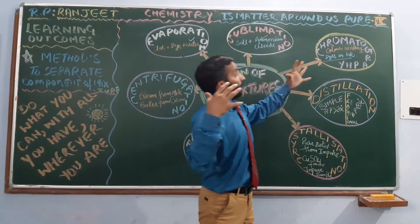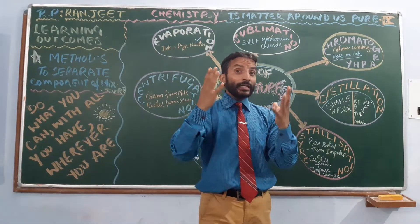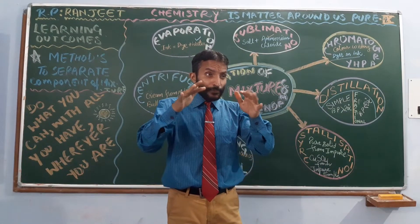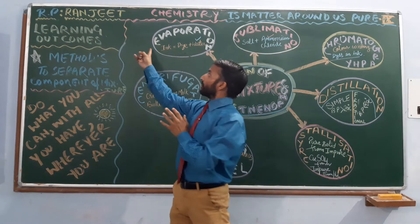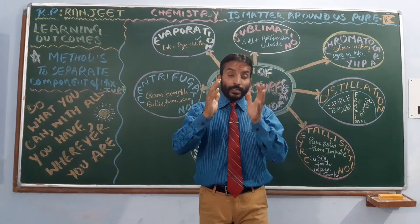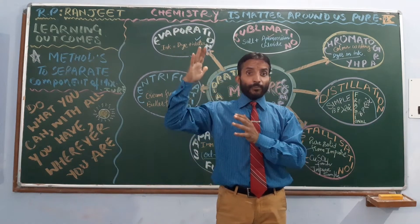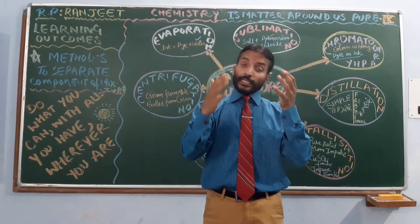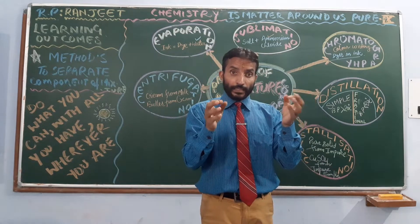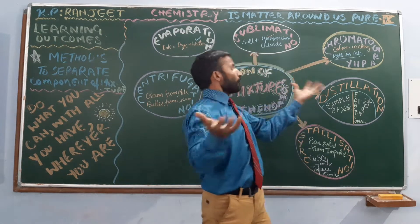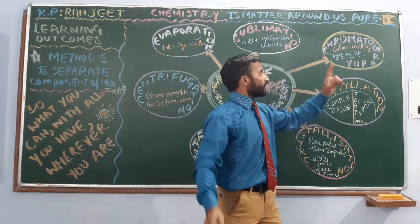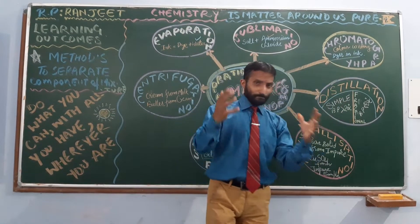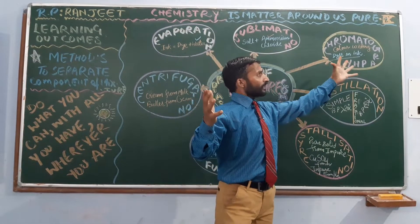Next is chromatography — meaning 'color writing.' This is the technique by which we can separate different colors in a dye. In our first experiment, we separated blue dye from blue ink by evaporation. Now, it is not the case that blue ink contains only blue dye — it is actually a mixture of two or three more colors. It can have black, red, and so on. How to separate different colors in a dye is done by chromatography. What is the principle? I will explain it as we do it practically.